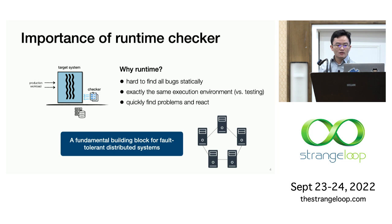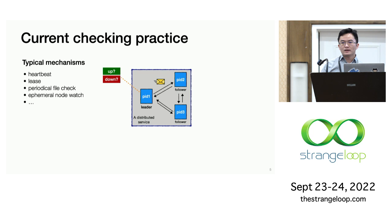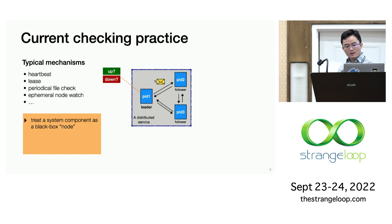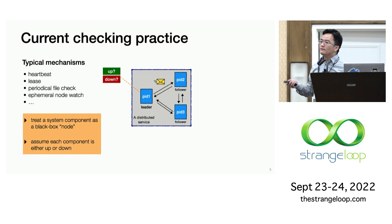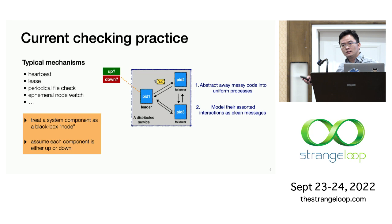In terms of checking practices, there are widely used mechanisms for runtime checking such as heartbeats, leases, and periodical health checks. These solutions typically treat each system component as a black-box node, assuming each node is either up and running well or down. These practices are really influenced by the way we build distributed systems, in which we abstract away messy code into some uniform processes and model their interactions as clean messages.